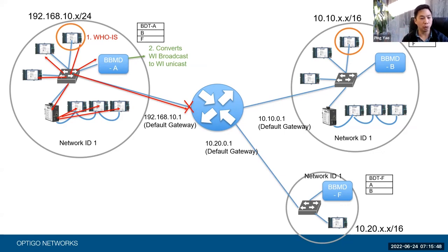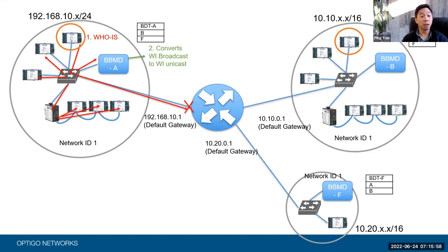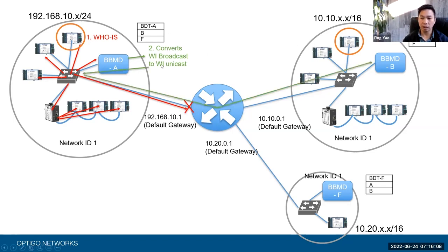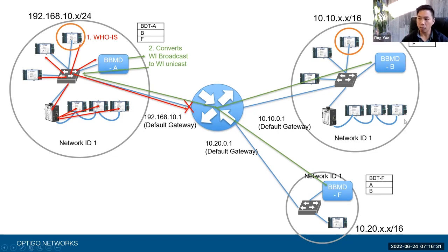These are predefined. You, as a user, as a programmer, as configuration — you have to define these things. So it looks at the BDT and sees it has two entries. It's going to create two unicast WhoIs messages and send them directly to those BBMDs. It converts it and sends it directly to B, and because it's unicast, it goes through the IP router. The second one is the same, sent to F. It sent two unicast messages: one to B, one to F.